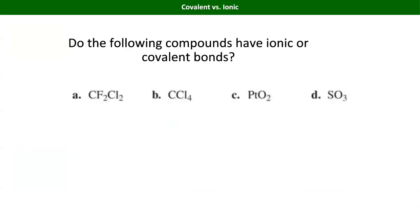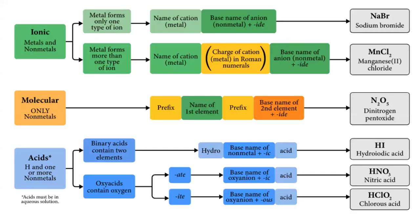Let's do some more conceptual stuff - how do we know which naming system to use? How do we know if it's an ionic compound? Metals and non-metals is your dead giveaway. The exception is there are one or two polyatomic ions that have a metal in them. There are also a couple of positively charged polyatomic ions.